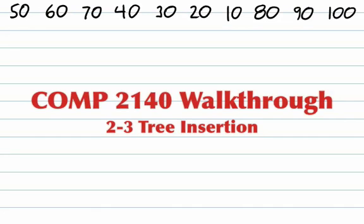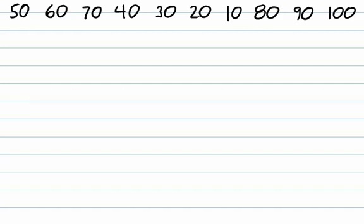Welcome to the Comp21 4-day walkthrough on 2-3-tree insertion. We're going to be inserting a sequence of values into a new empty 2-3-tree. Since the tree is empty, our initial root node is going to be null. So the first value we insert, 50, is going to require a new node be created for it. That's going to be both the root of our tree and the only leaf node contained in our tree.